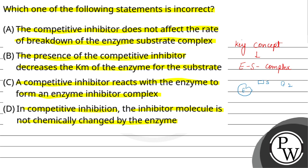So the inhibitor — याने की जो inhibitor होता है — वह competitive करता है enzyme की active site पर, और EI complex का formation करेगा। यह enzyme-inhibitor complex बनता है, और इसमें product नहीं बनता — no product.